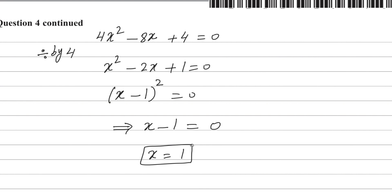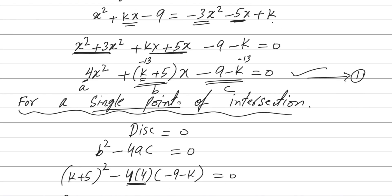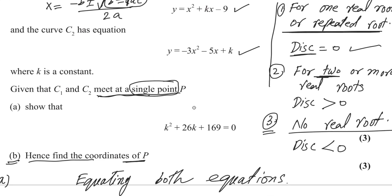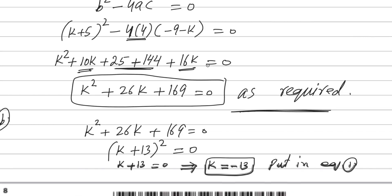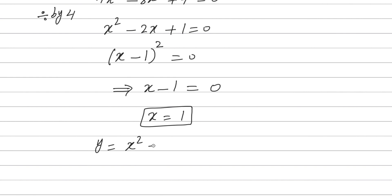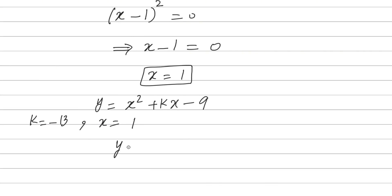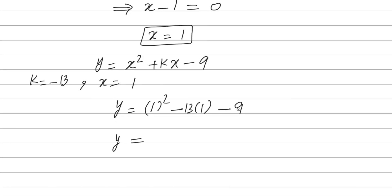We got the x coordinate of point P, which is x equals 1. Now we need the y coordinate. Substitute k equals negative 13 and x equals 1 into the equation of curve C1: y equals x squared plus kx minus 9. This gives y equals 1 squared plus (negative 13 times 1) minus 9, which equals 1 minus 13 minus 9 equals minus 21. Therefore the coordinates of P are (1, negative 21).